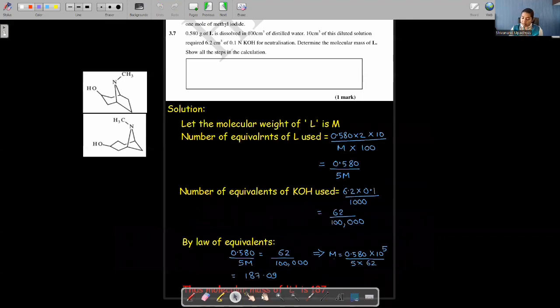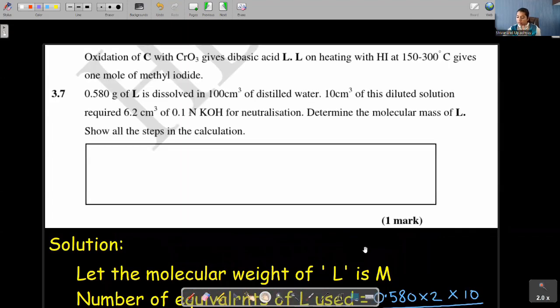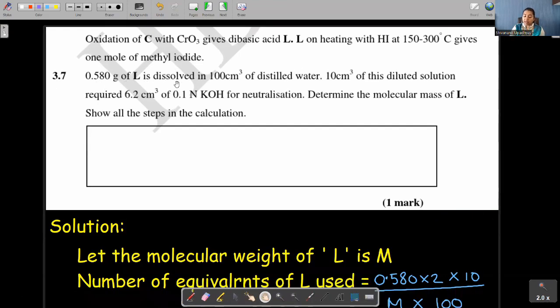Moving to next part. This question reads oxidation of C with CrO3 gives dibasic acid L. L on heating with HI at 150 to 300 degree centigrade gives one mole of methyl iodide. 0.580 grams of L is dissolved in 100 cm³ of distilled water. 10 cm³ of this diluted solution requires 6.2 cm³ of 0.1 normal NaOH for neutralization.